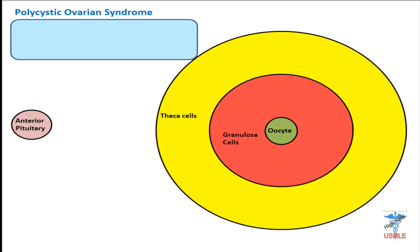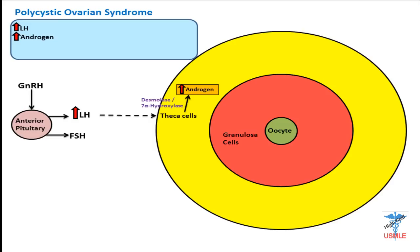In polycystic ovarian syndrome, the problem is we have too much LH — that's the main point of this disease. This increase in LH works on theca cells, and theca cells are going to make androgen, but they're going to make too much of it. Too much androgen does two things: first, it causes hirsutism, which is abnormal growth of hair. The other thing it does — it travels to the adipose tissue and gets converted into estrone, so we're going to have too much estrone in the body.